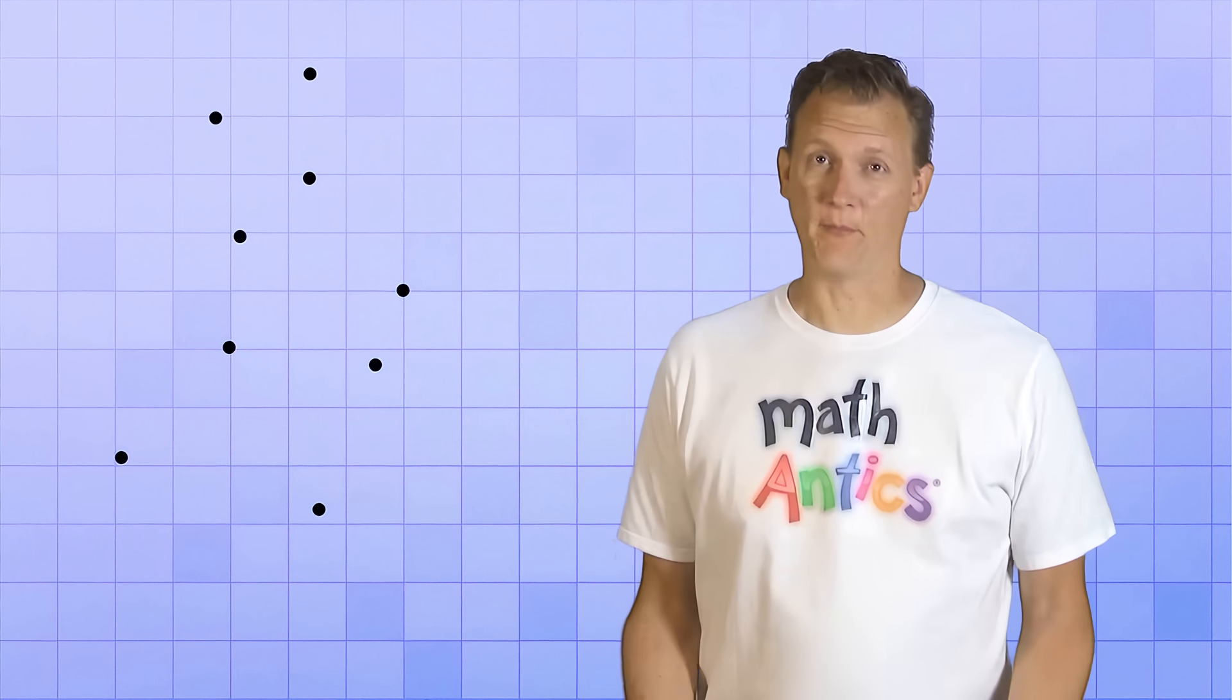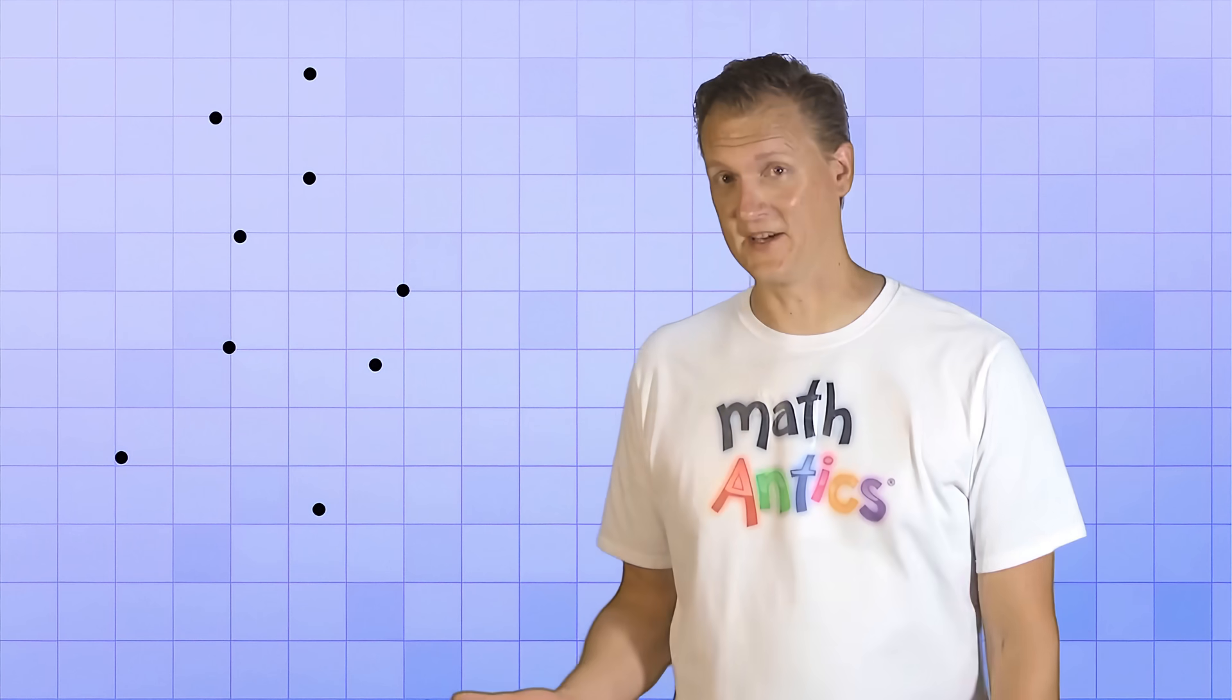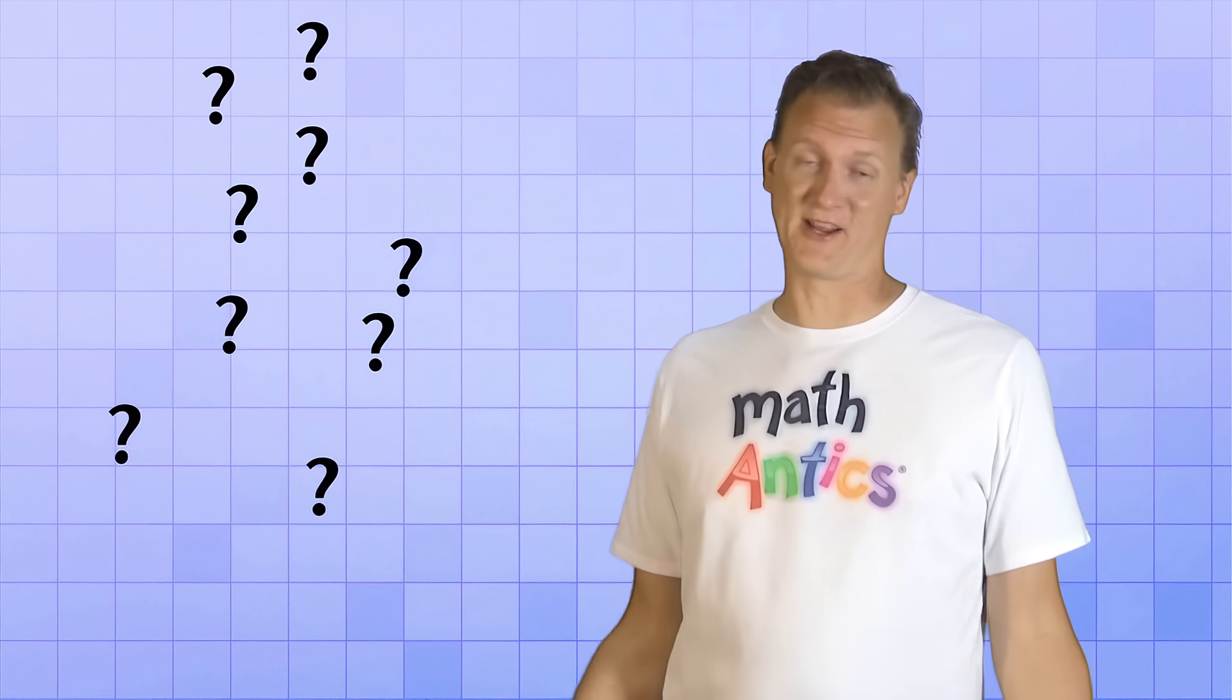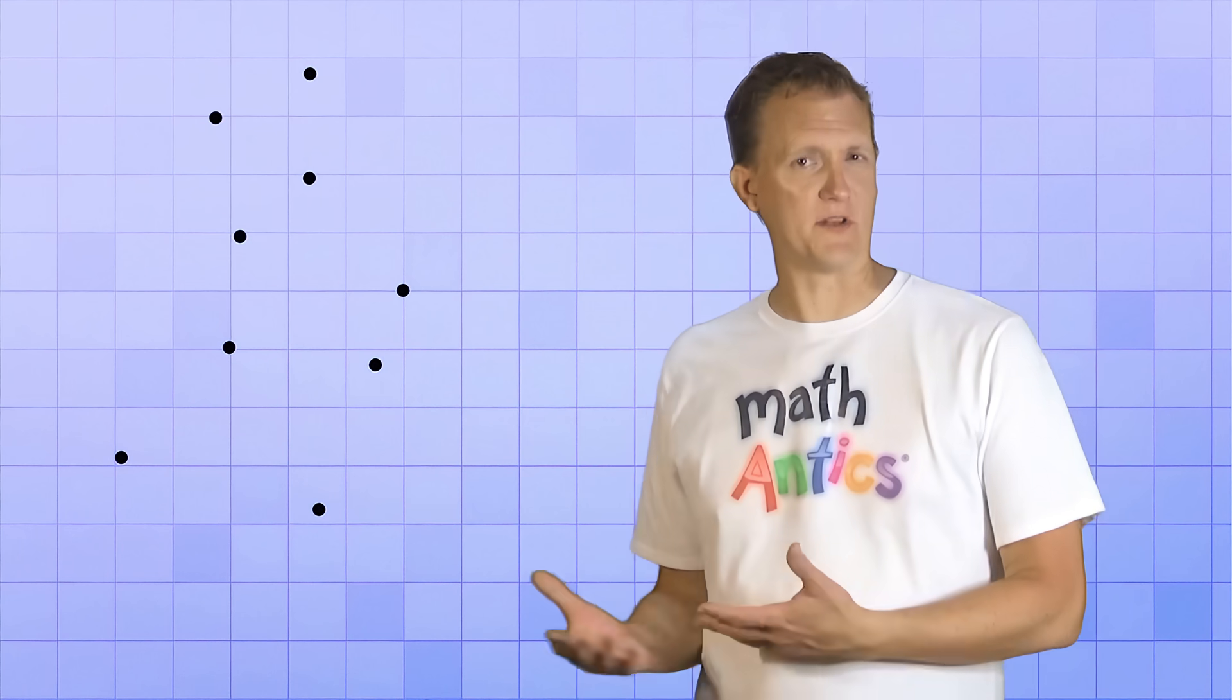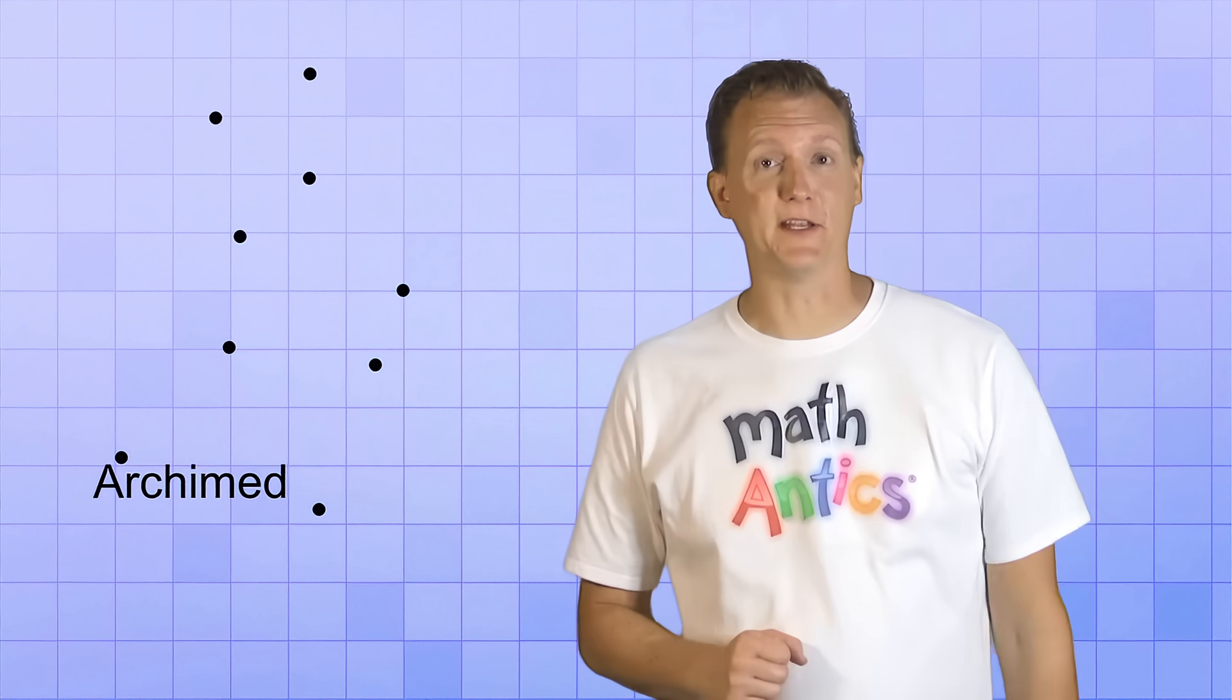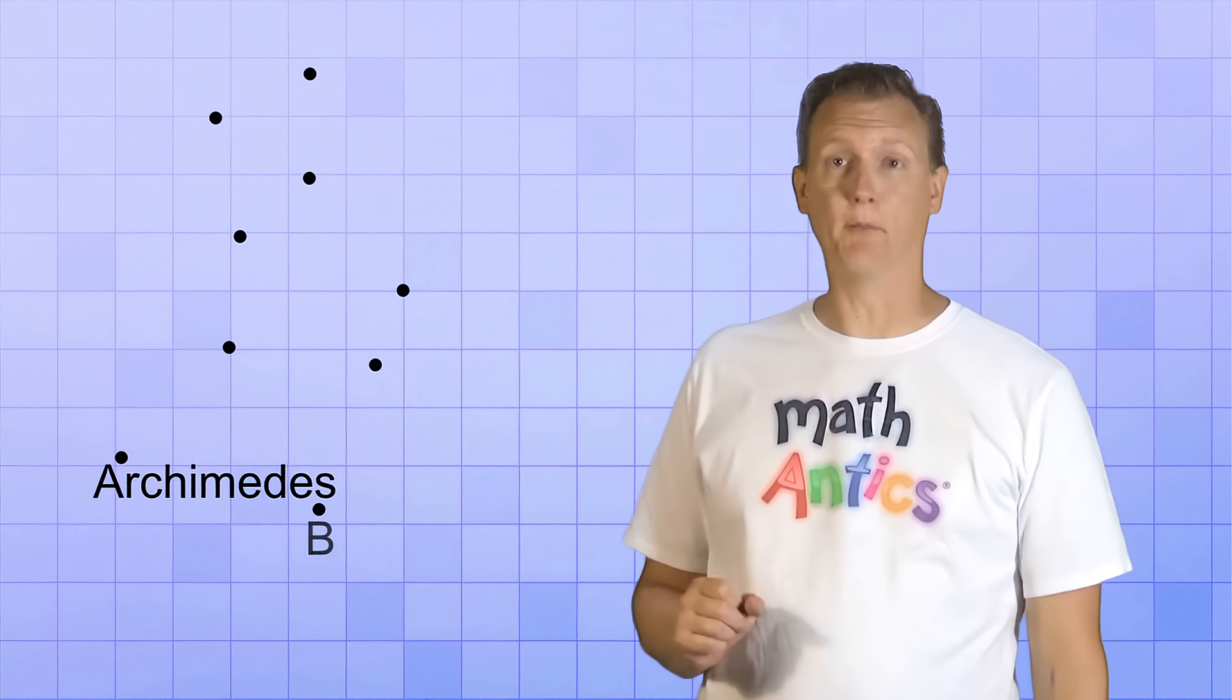But they won't really help that much unless we name them. Because if I say, hey, look at that point over there, it's kind of hard to tell which one I'm talking about. I mean, they all look the same. So what names should we give these points? Well, let's see, how about Archimedes and Beauregard?